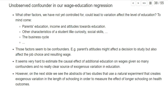Factors that come to mind include parental education, their income, attitudes towards education, student characteristics like curiosity and social skills, and also the business cycle — if it's hard to find a job, people may decide to add a master's degree and search for work afterwards. But most of these factors seem to be confounders, since they could also affect wages through channels other than education. For example, social skills can directly affect wages.